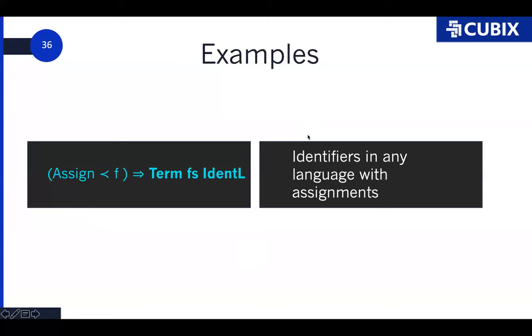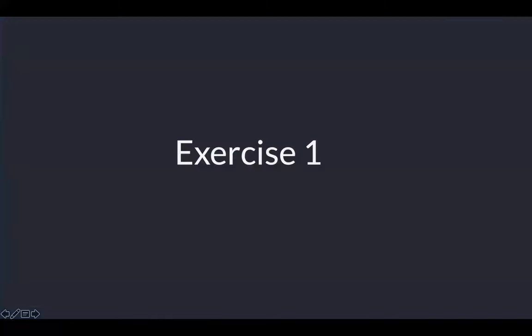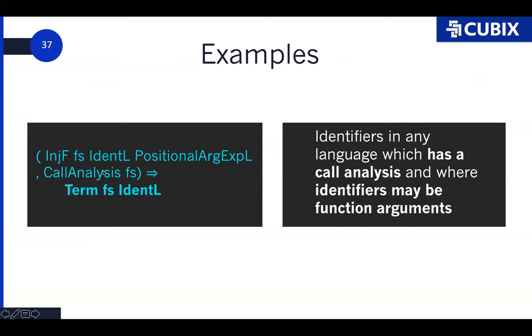I start to add constraints. Terms s ident L. In a language where assign is a subsort of Fs. That is identifiers in any language with assignments. And in this one here, I've added a bunch of things. It's identifiers in any language which has a call analysis. And this thing here is a sort injection to talk about in great detail later. It means where identifiers may be used as normal function arguments. And you can already start to imagine how this kind of thing might be useful in many transformations.